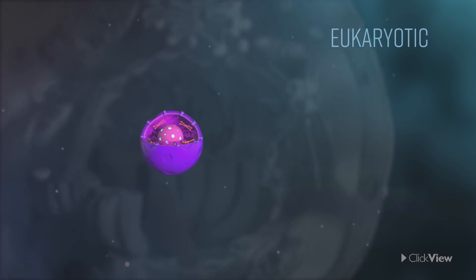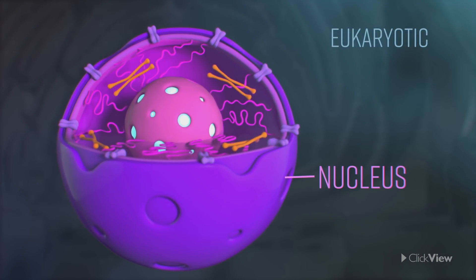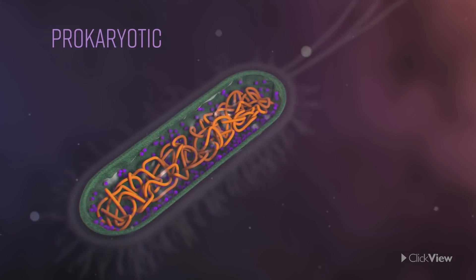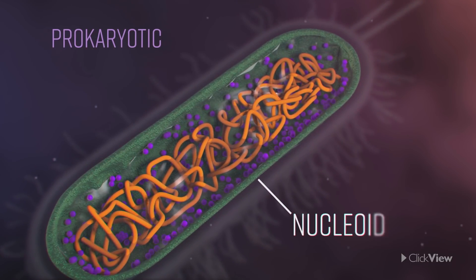In single-cell organisms — prokaryotes — there is a cell, and we will look at eukaryotic cells. If we look at eukaryotes, there is a cell in our body, and there is a nucleus. In that nucleus, there is genetic information and DNA. Prokaryotes are single-cell organisms like bacteria and archaea. If you look at the cell, there is DNA or genetic information.